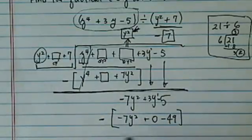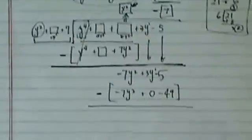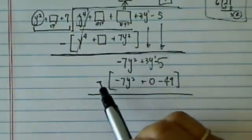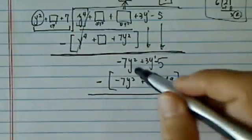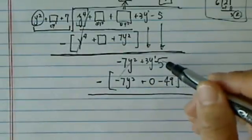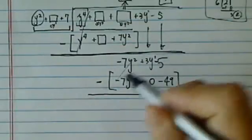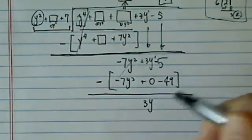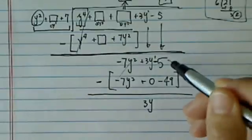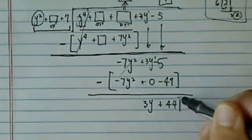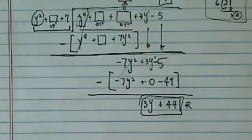Okay, once again, we're subtracting, so let's just slow down. Let's say that out loud. Minus seven y squared, minus minus become positive, so they're canceling out. Minus five minus, oh, I missed the term. So, three y minus zero, which is three y, minus five, minus minus, become a positive 44. So, this becomes my remainder.